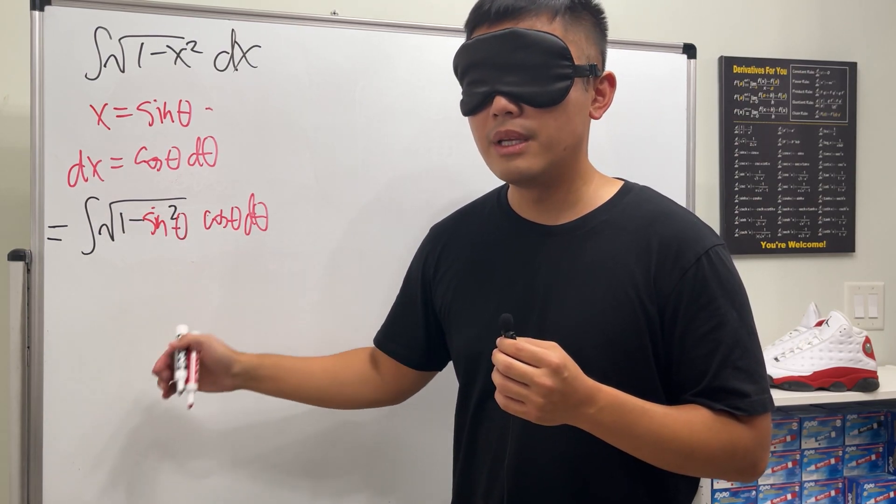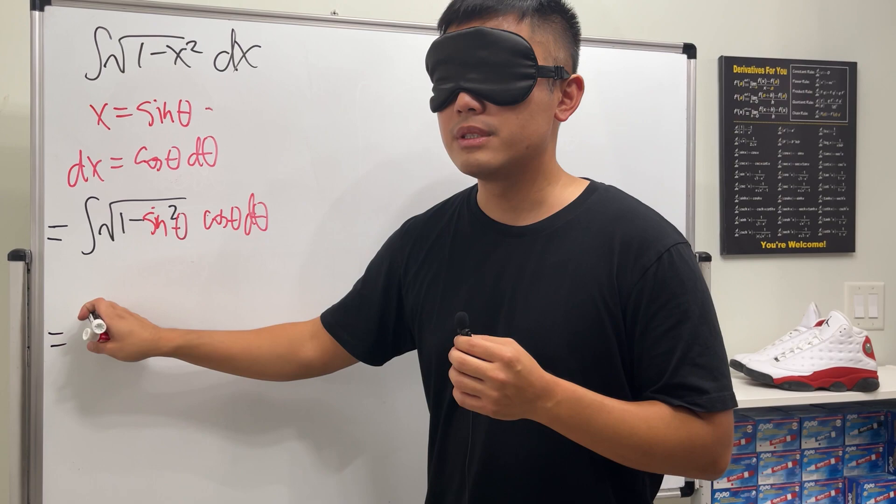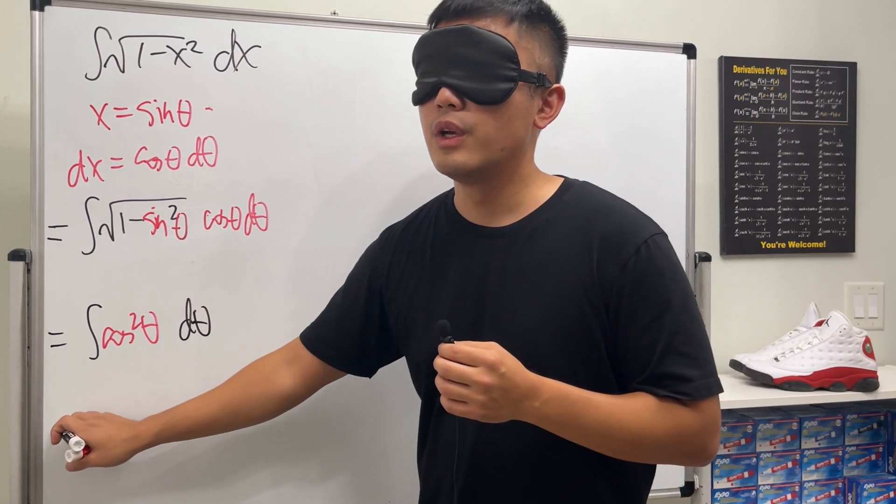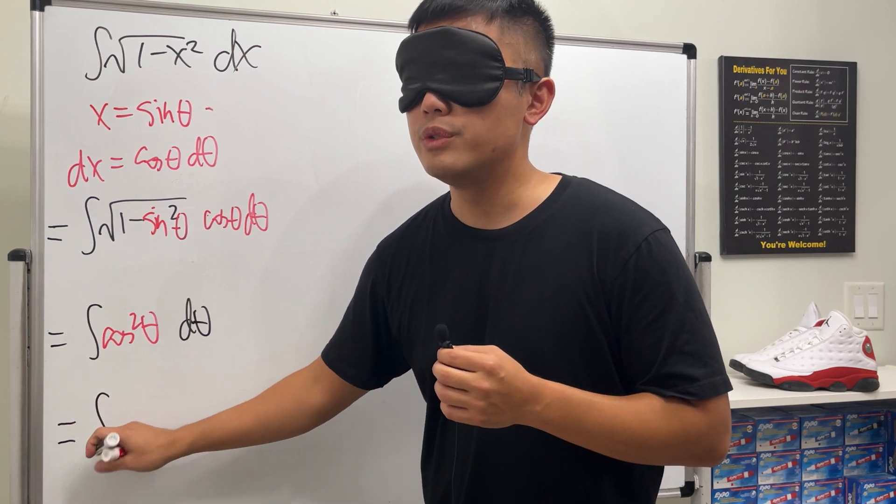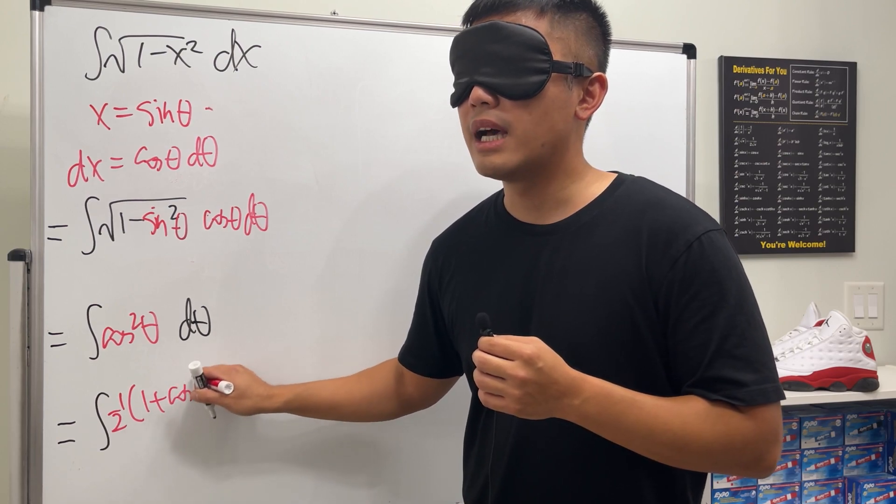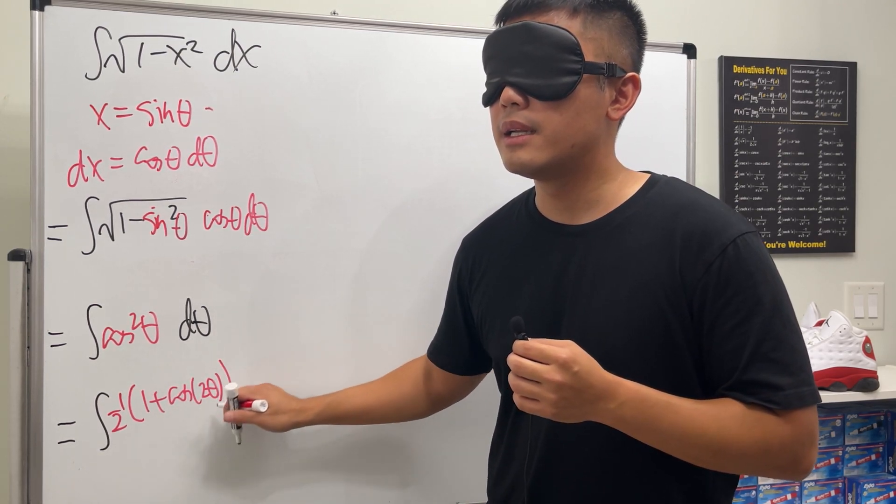And to integrate this, we will just use the trig identity, which is one half times one plus cosine of two theta, and of course we have the d theta here.